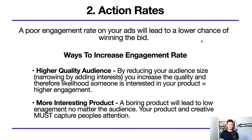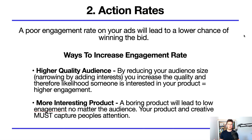Point two for improving action rate: advertise more interesting products. One of the biggest mistakes beginners make is not choosing rubbish products but choosing products that aren't suited for Facebook. You can find products on AliExpress with thousands of orders, but if they aren't interesting or eye-catching, people will glaze straight past them, leading to a low engagement rate. This also goes hand in hand with your creative — a cool product advertised in a boring way won't capture attention or get engagement.